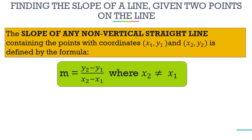Why should x₂ not equal x₁? It's because if they become equal, the slope will become undefined. So we must make sure the slope is not undefined — therefore x₂ and x₁ should not be equal. The letter m represents the slope; it is the symbol for slope. Again, the formula is m = (y₂ - y₁) / (x₂ - x₁).